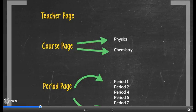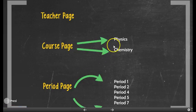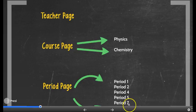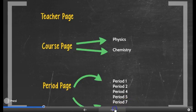For example, if you taught both physics and chemistry, you would receive one course page for each. And if you taught periods 1, 2, 4, 5, and 7, you would receive one period page for each.